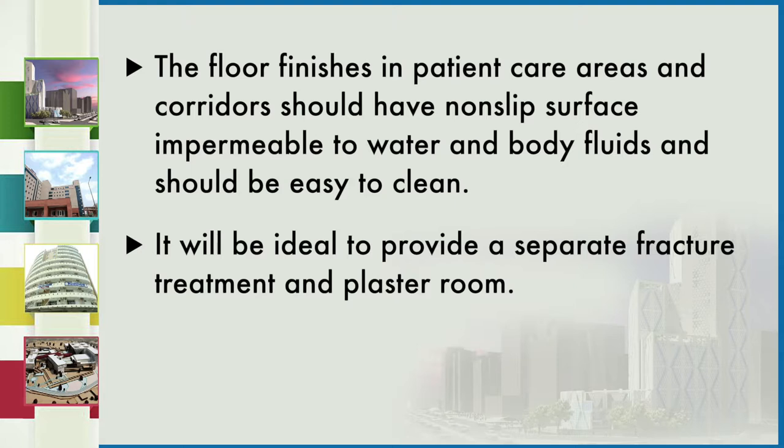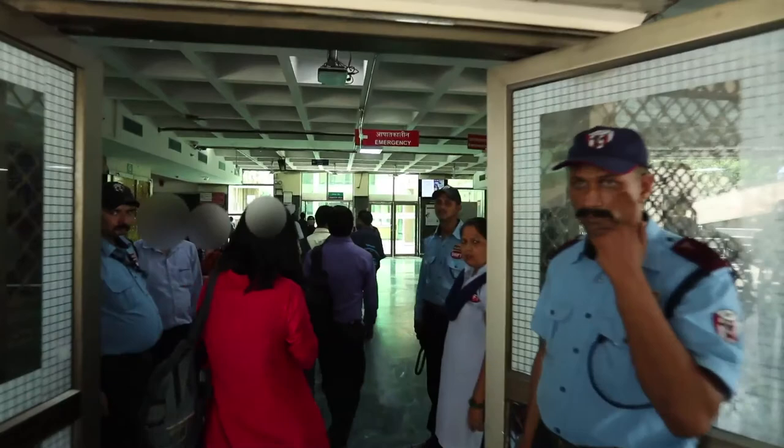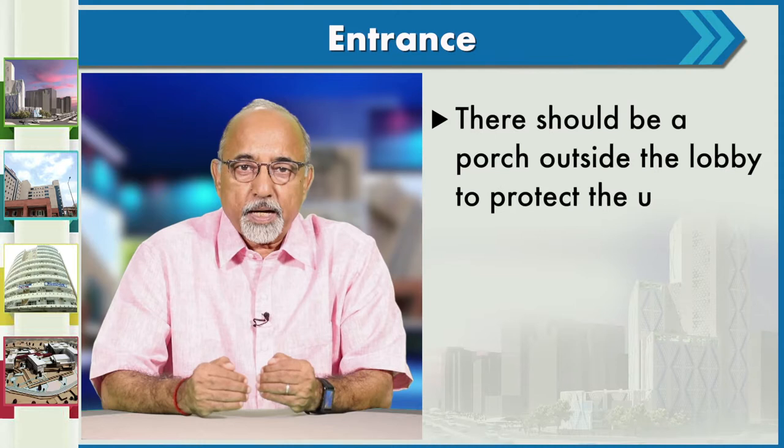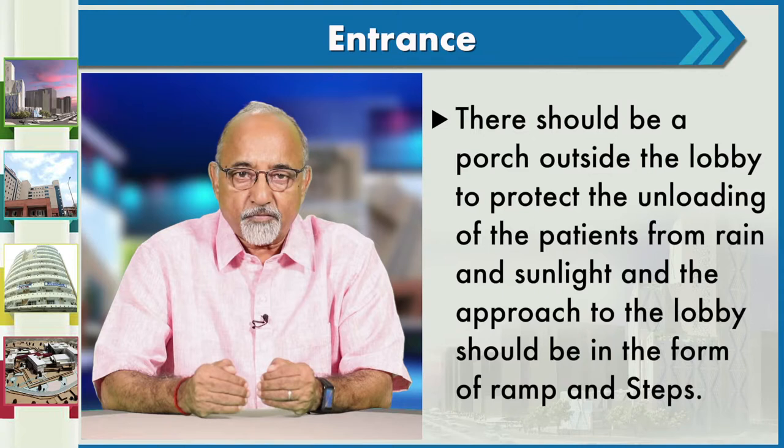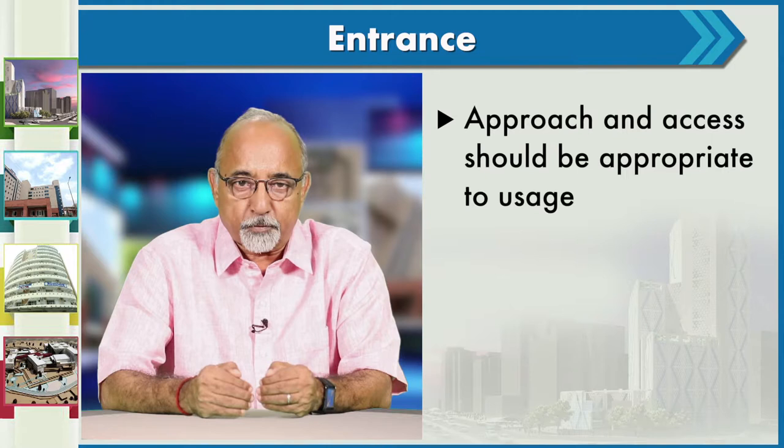It is ideal to provide separate fracture treatment and plaster rooms. The emergency operation room should be self-contained. The entrance should be well marked and illuminated, opening into a spacious lobby. There should be a porch outside the lobby to protect patients from rain and sunlight during unloading, and the approach to the lobby should be in the form of a ramp and steps, with access appropriate for disabled patients.